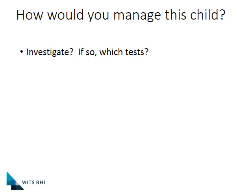So how do we take this forward? This is where we get stuck. Do we start investigating at this point, and what investigations do we do on a five-year-old child? Do we try antibiotics once more? Should we put this child on TB treatment, or consider something else like LIP? It's very difficult to make a clear diagnosis of TB in children. In the next presentation, we will focus on a systematic way to assess a child for TB, using Lerato as an example.